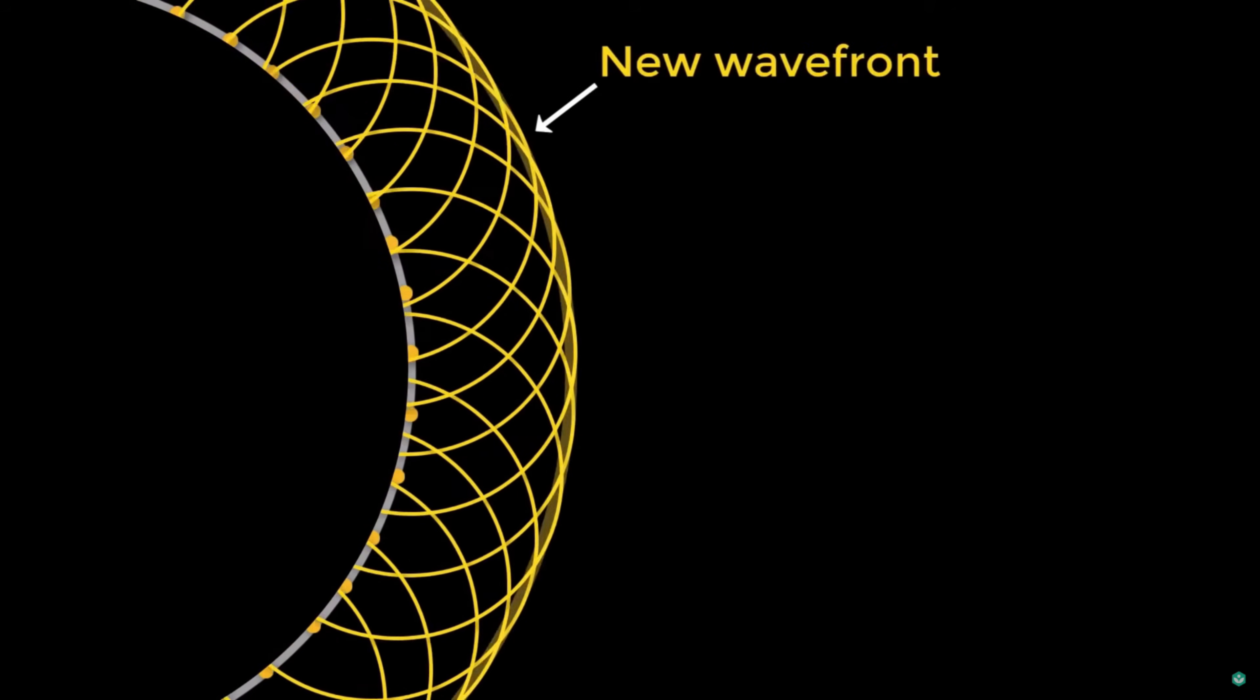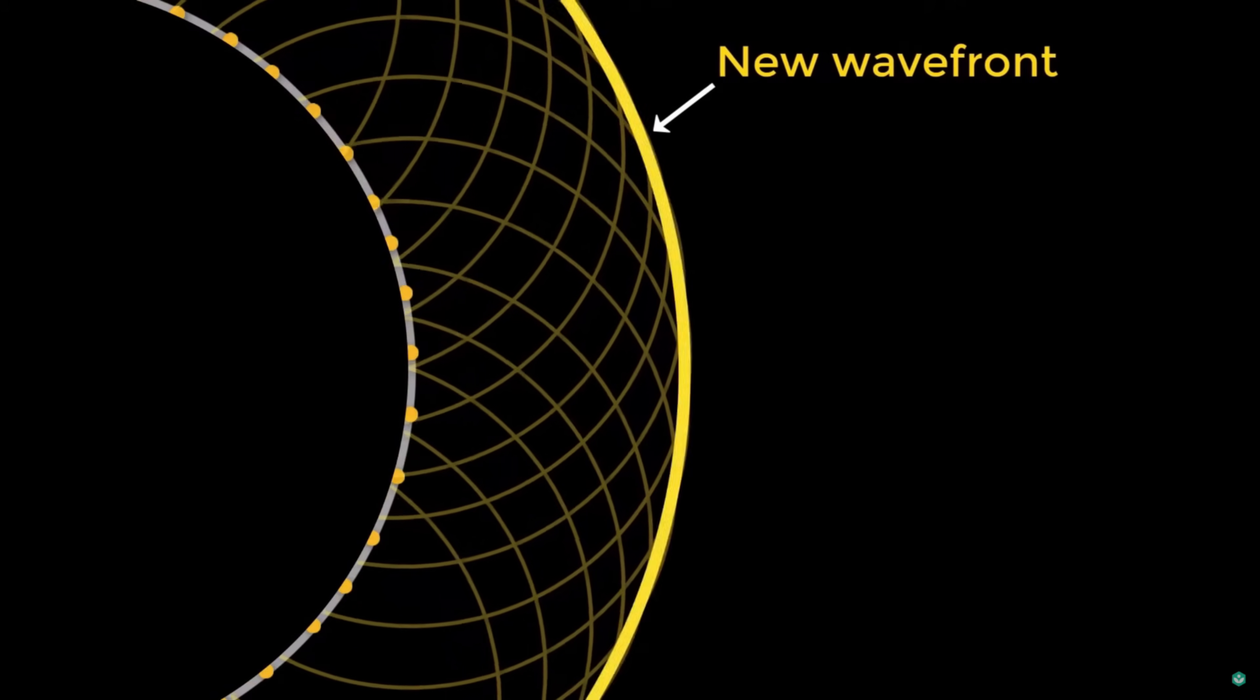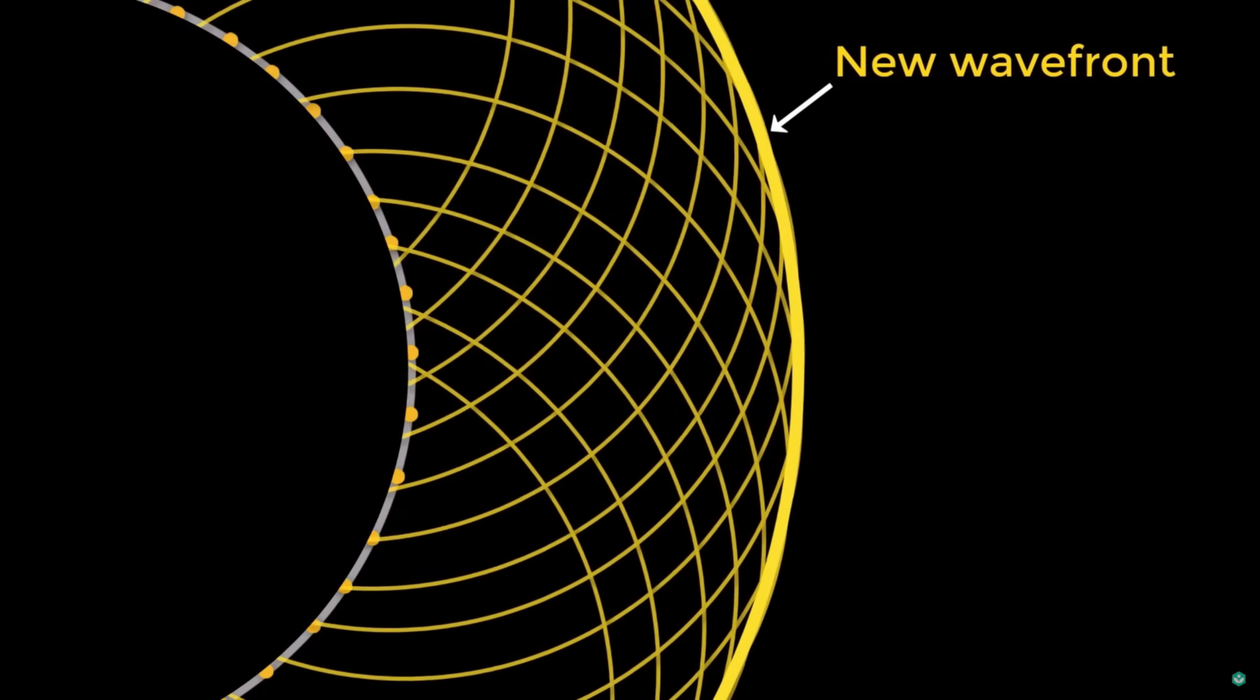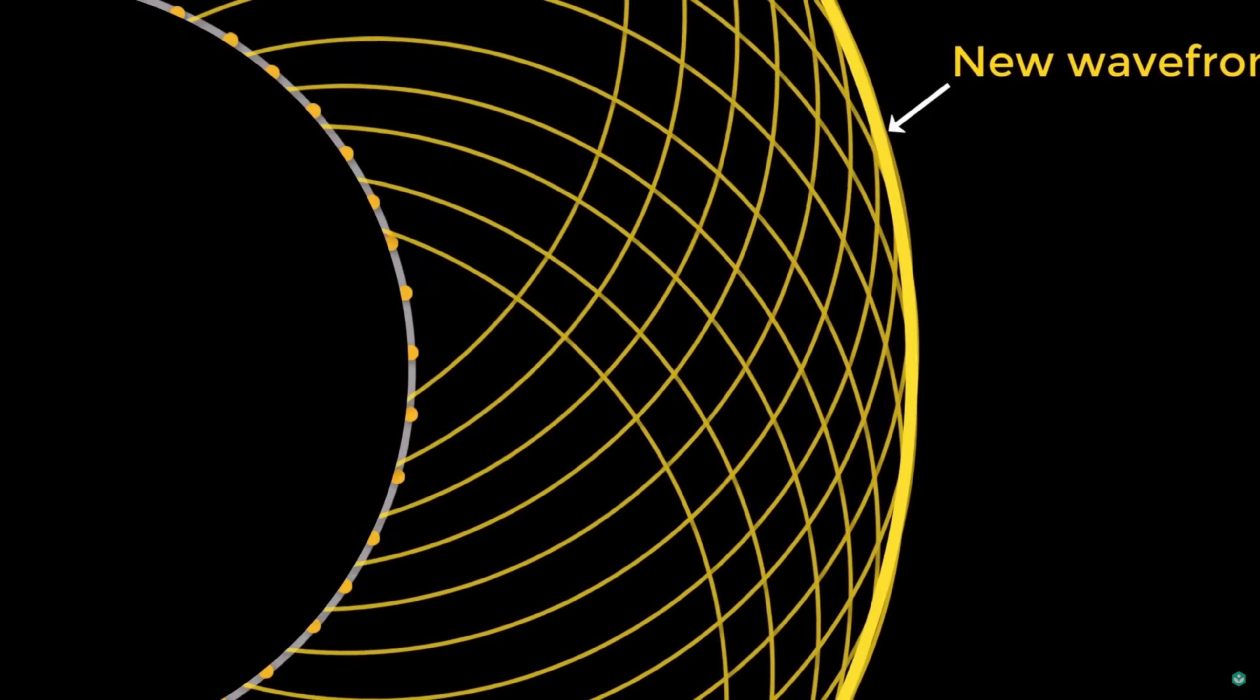Huygens proposed that every point on a wave front of light can be thought of as a tiny secondary source of new wavelets. And as time moves forward, the envelope of these wavelets combine to form a new wave front, and so on, like a continuous ripple moving through space.